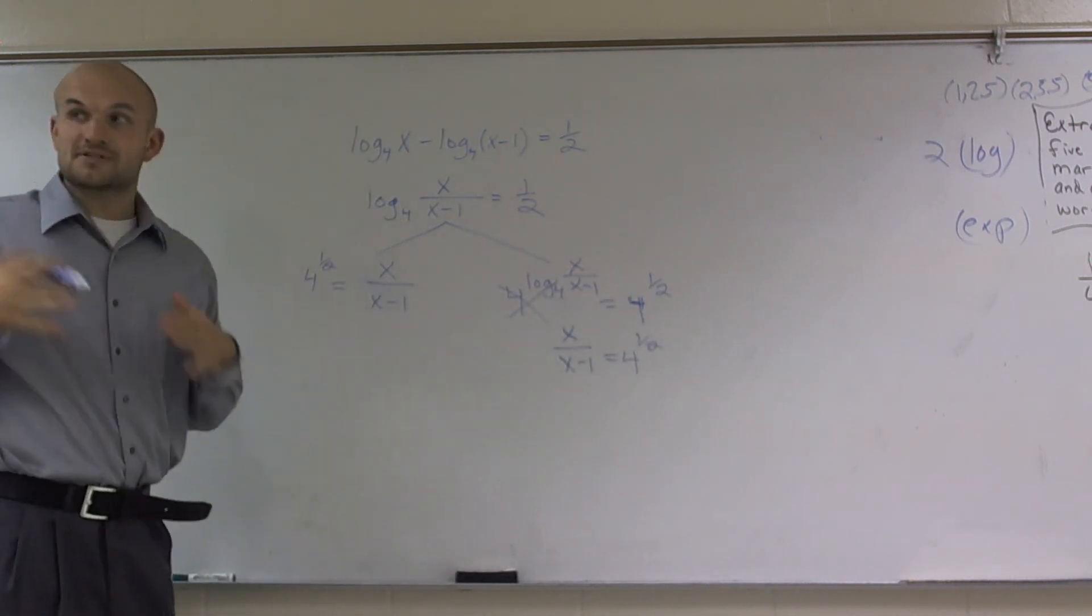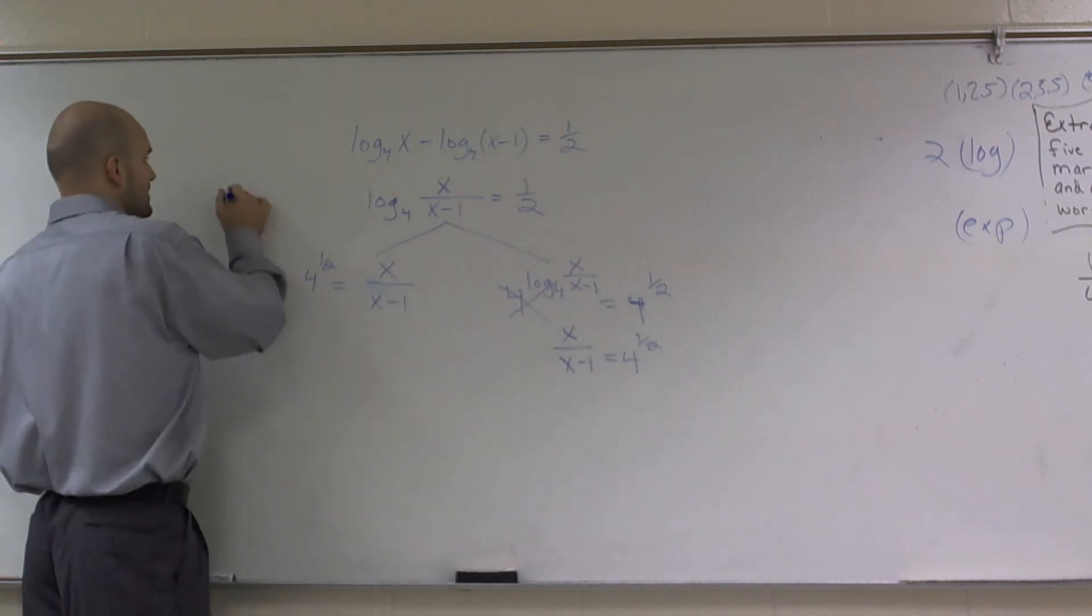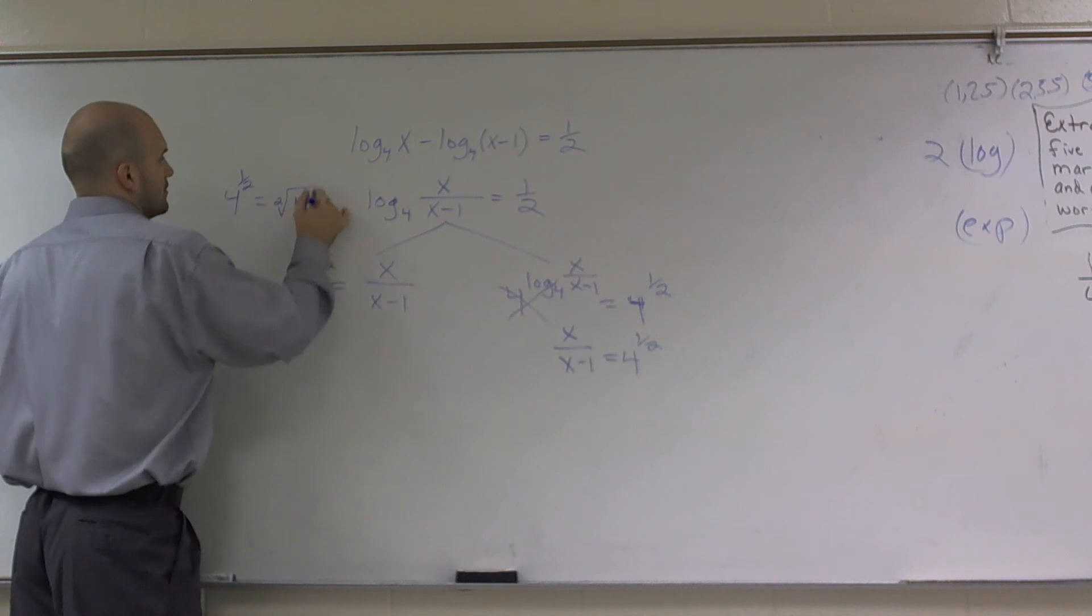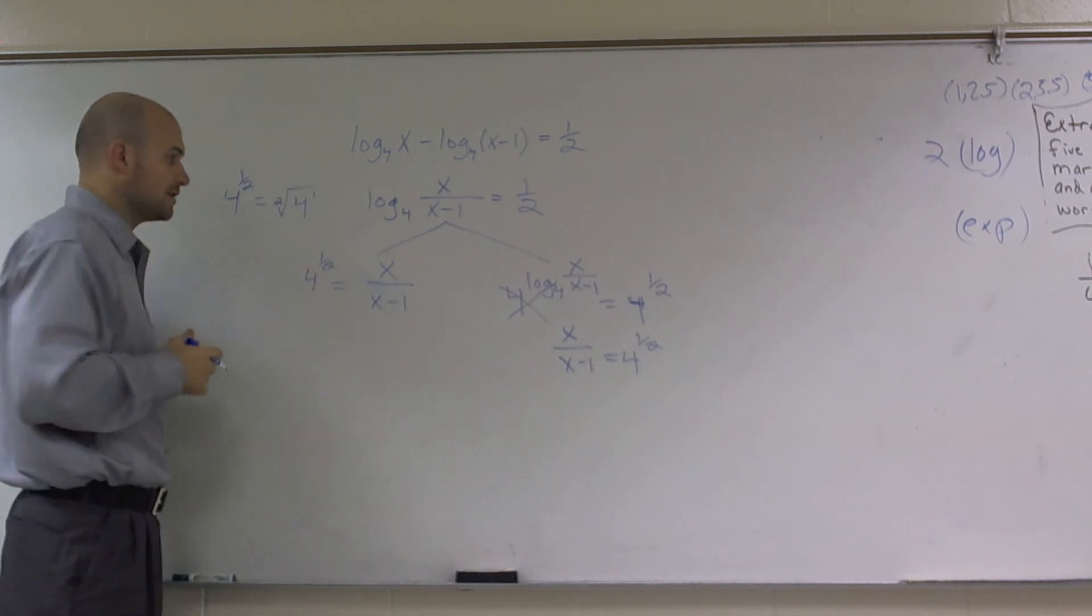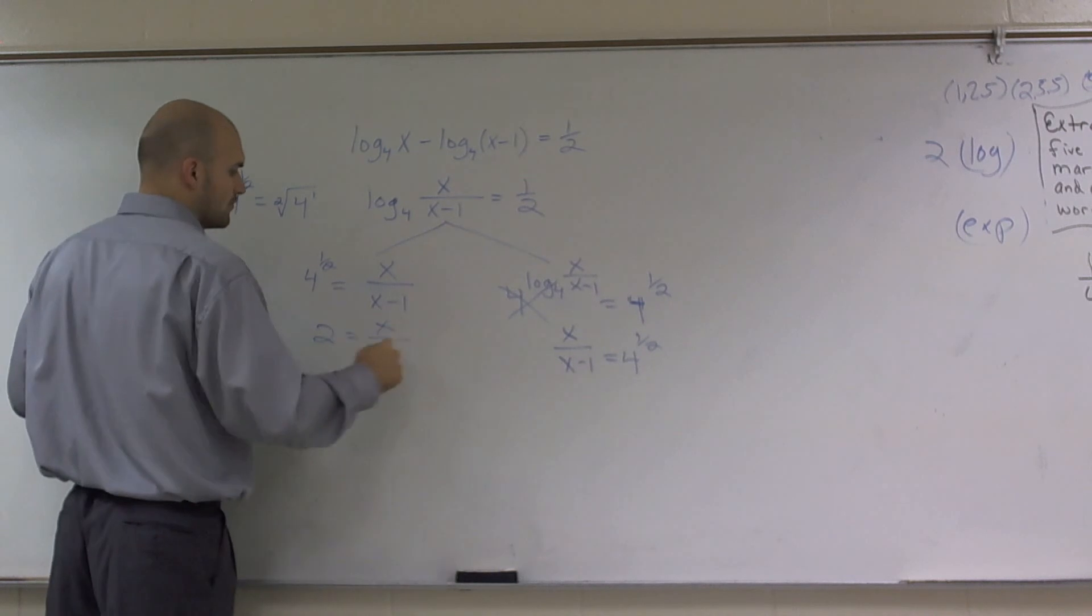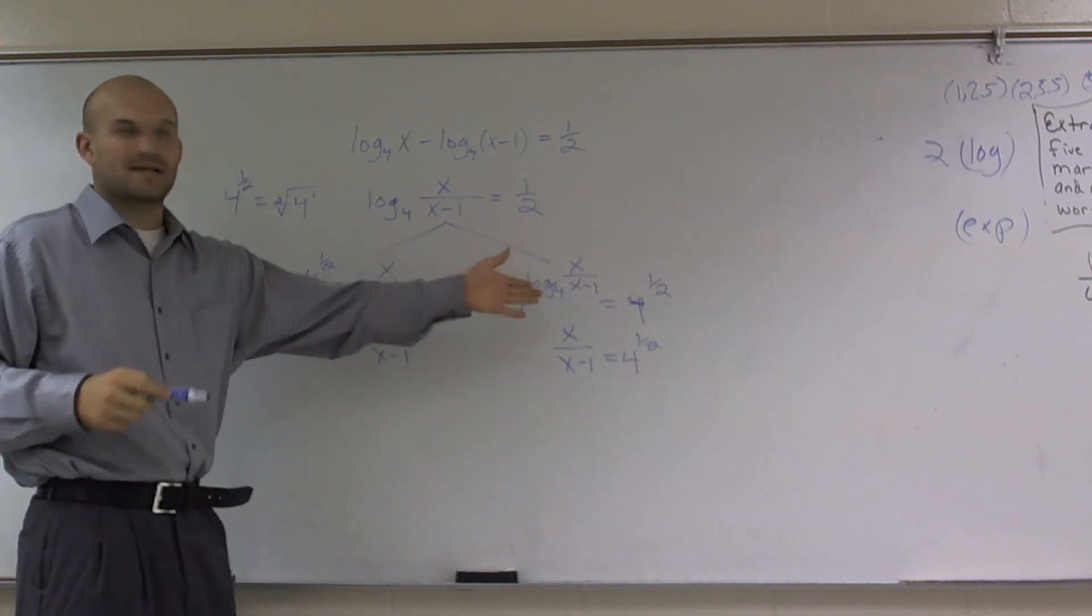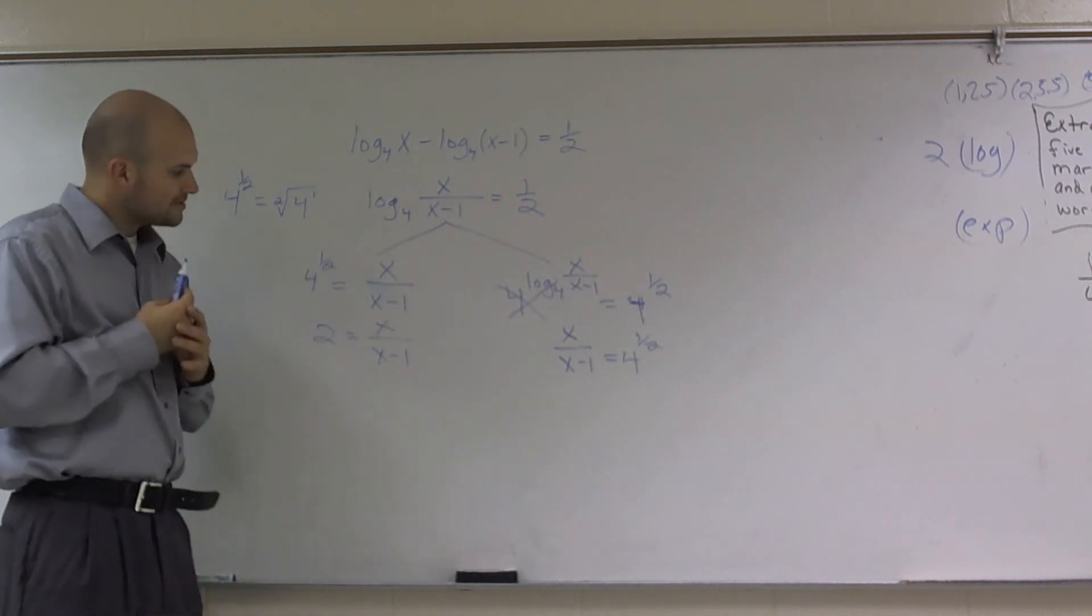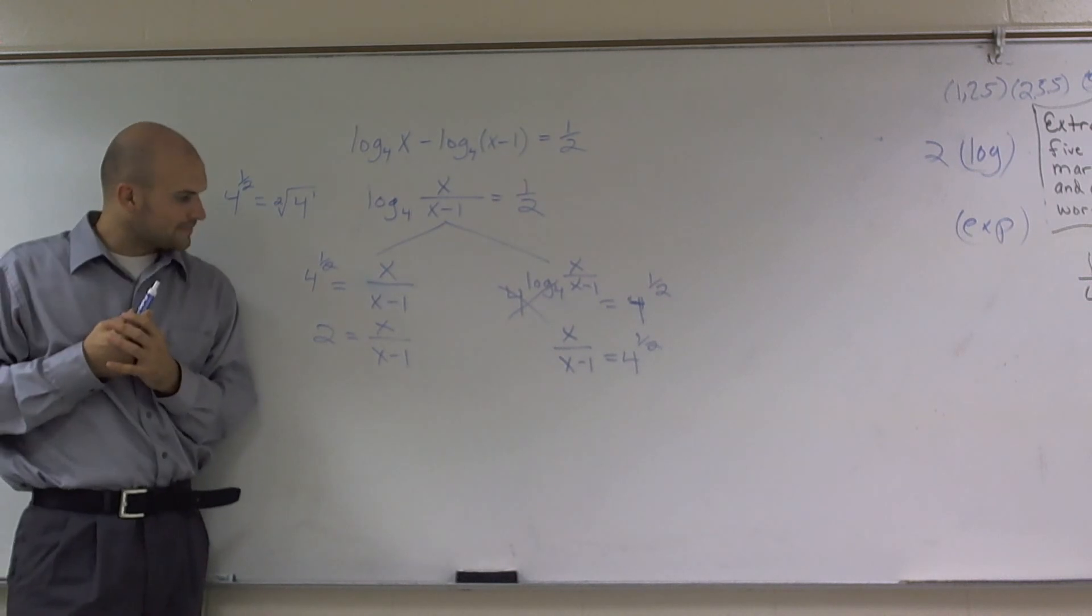Now, the other thing you have to remember is 4 to the 1 half power is the same thing, which we call the square root of 4. So therefore, this answer is 2 equals x over x minus 1. Since these are the same thing, I'm only going to solve this side. So here's where I'm at right now.